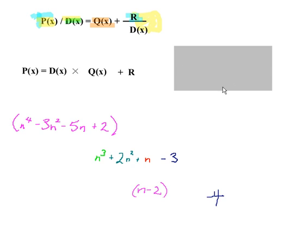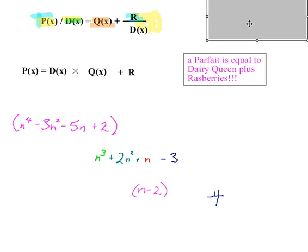Just as a memory tool, though, I'm just going to reveal this because I like that kind of thing. Woo-hoo! A parfait is equal to Dairy Queen plus raspberries.